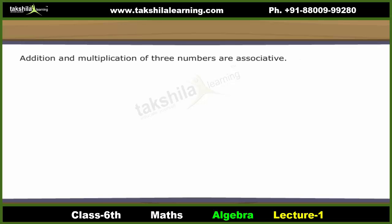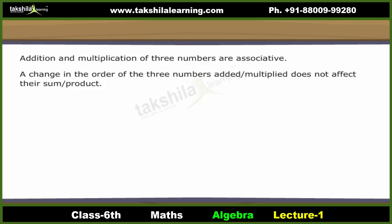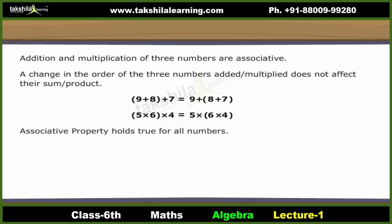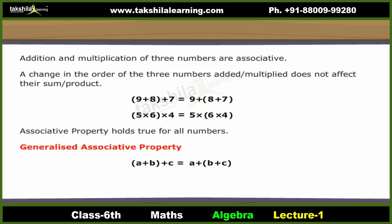Associative property: Addition and multiplication of three numbers are associative. In other words, a change in the grouping of the three numbers added or multiplied does not affect their sum or product. (9 plus 8) plus 7 is the same as 9 plus (8 plus 7). (5 into 6) into 4 is the same as 5 into (6 into 4). The associative property holds true for all numbers. We can generalize it as: (a plus b) plus c equals a plus (b plus c), and (a into b) into c equals a into (b into c).